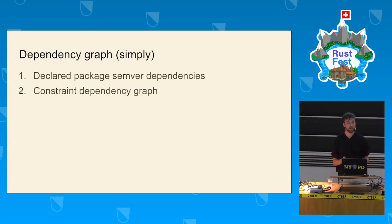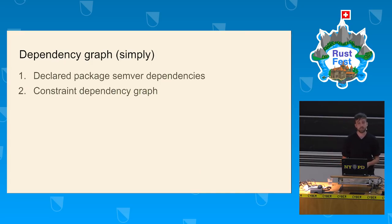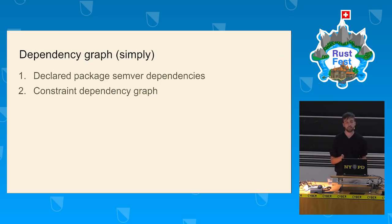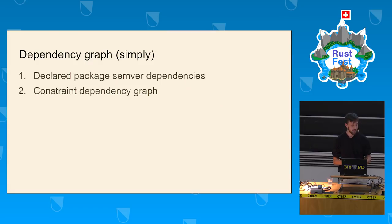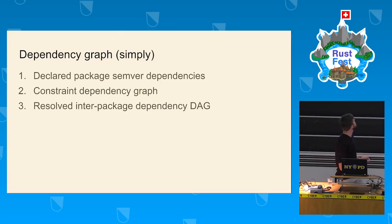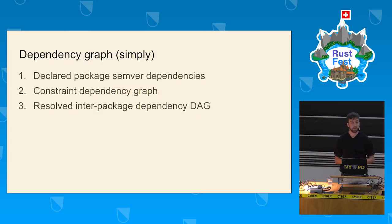What cargo does is look at the declared package dependencies with version constraints — for example, exactly version 1.2.0 for a given dependency, or any compatible version. With this information and these dependency constraints, we get a constraint graph. Resolving those constraints produces a dependency directed acyclic graph between packages.